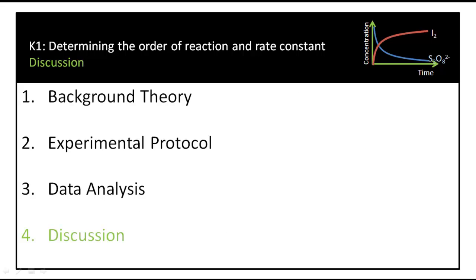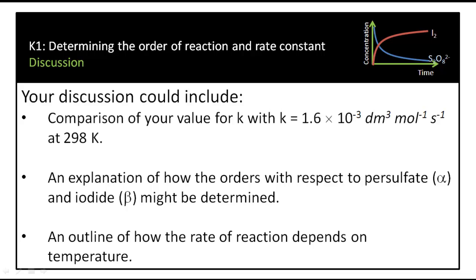For discussion, you could compare the rate constants obtained with the literature value at 298 K. You might explain how the orders of reaction with respect to persulfate (alpha) and iodide (beta) could be determined experimentally, rather than assumed to be 1. You could also describe how the rate of reaction depends on temperature, based on the pooled class data.